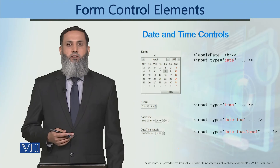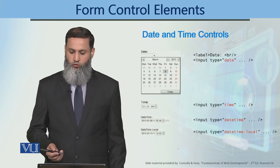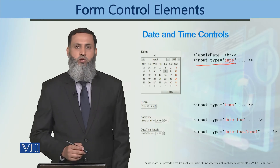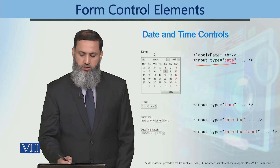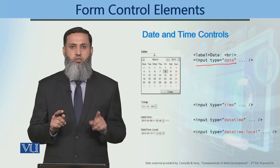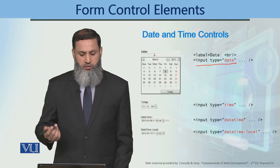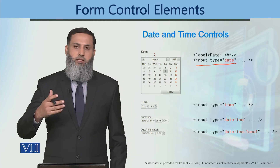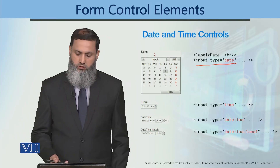If you want to use date, month, week, or time input, you will have different controls available. For a date input, you use input type equal to date. When the user clicks the control, a calendar-type dialog box appears where you can select the appropriate date. The appearance of this dialog box may differ from operating system to operating system, but all dialog boxes support entering a date.